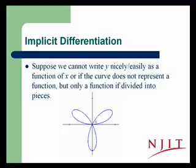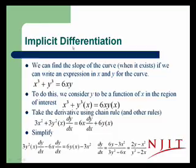It's clearly not a function. However, if we consider the curve in certain regions, for example, the region of the first quadrant where I'm pointing, in this region the curve is a function, and so we ought to be able to find the slope of the function, at least in this region. And we can do that region by region by using the technique called implicit differentiation.